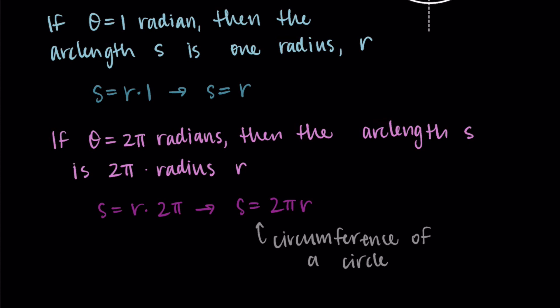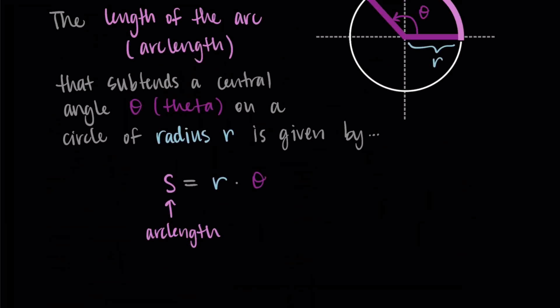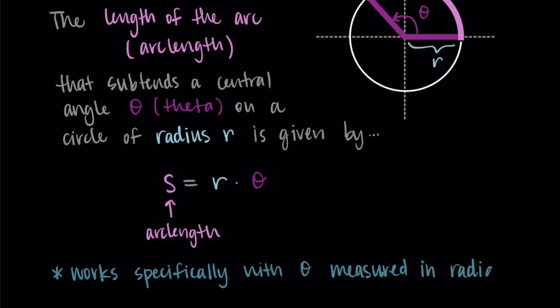So because this idea of arc length relates back to radians, radians where the length of the arc is one radius, this formula is only going to work with theta, our angles measured in radians. So if you're ever doing these and you're given an angle that's in degrees, you're going to need to put it into radians because this formula works specifically for radians.